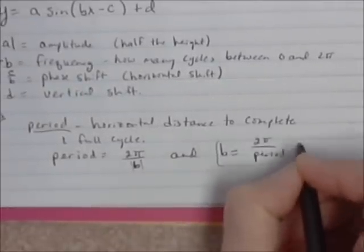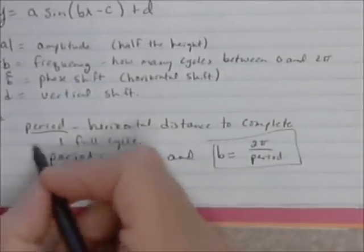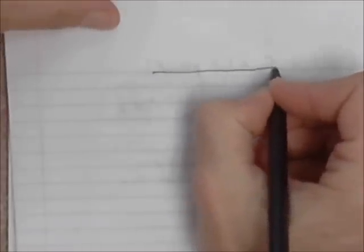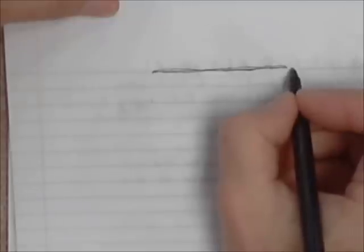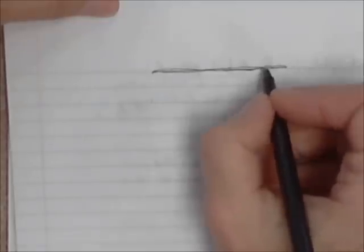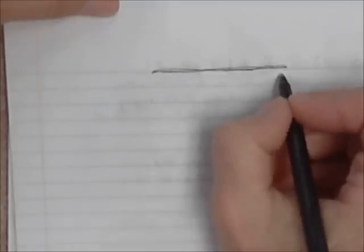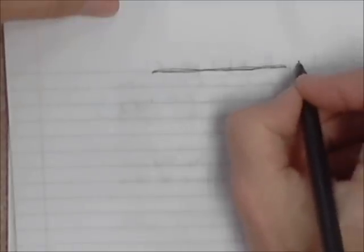Those are two little equations that you should know when you're graphing sine curves. A sine curve has a midline — I call this the midline. If the curve has not been vertically shifted, the midline is the x-axis. But if there's a vertical shift, the midline is y equals d, whatever the value of the vertical shift is.